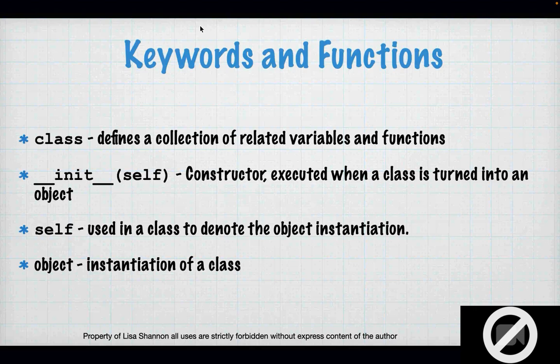A class is a definition. An object is actually taking a chunk out of memory and doing something with it. Self is used in the class to denote the object that you're using. And that's sometimes hard for students to think about in the beginning, because right now we have a variable or a list. Now we're going to have objects, and those objects are going to be of type that we create, because a class is really a type. So we have an int type, a float type, a boolean type, and now we're going to have a class. An object is an instantiation of a class, and that's where you're actually carving out the memory and putting something into it.